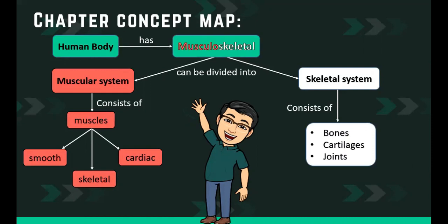We'll start first with the chapter concept map. The human body has a musculoskeletal system that can be divided into two: the muscular system and the skeletal system. The muscular system consists of the muscles and has types — smooth, skeletal, and cardiac muscles. For the skeletal system, it consists of the bones, cartilages, and the joints.